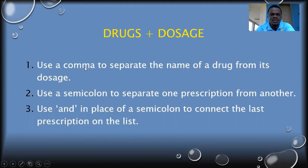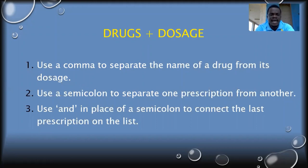First, you use a comma to separate the name of the drug from its dosage while writing such a prescription. Then you use a semicolon to separate one prescription from another prescription. And finally, you use the conjunction AND to connect the last two prescriptions on the list.